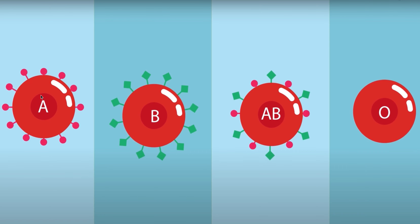To summarize: a person with aglatinogen A on the red blood cells has blood group A; aglatinogen B means blood group B; aglatinogen A and B together means blood group AB; and no aglatinogen on the red blood cells means blood group O. This is how we can determine a person's blood group by examining the antigens present on their red blood cells.